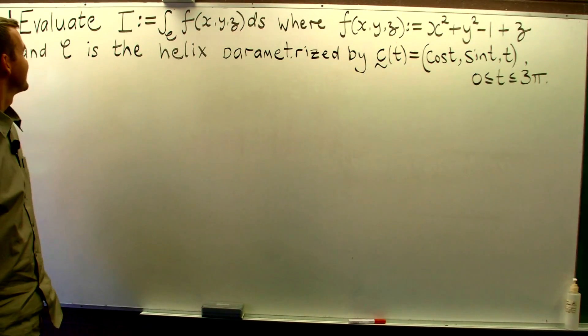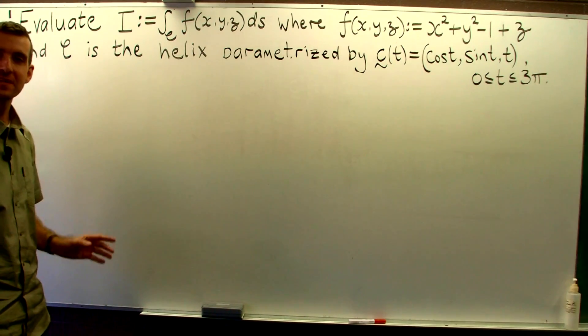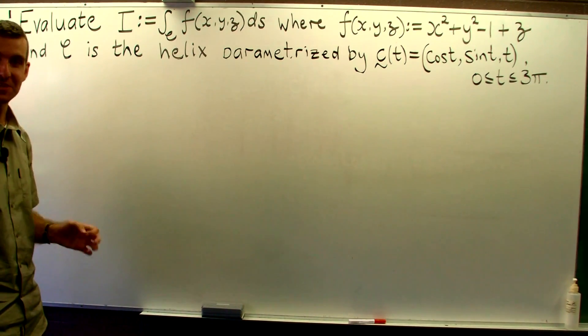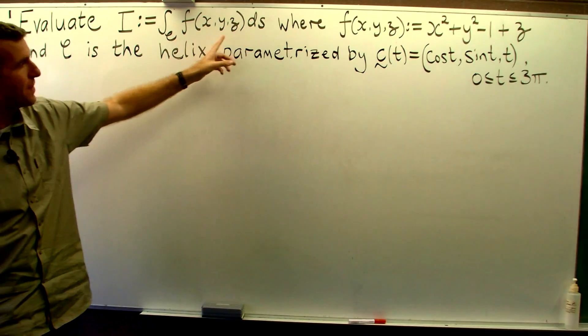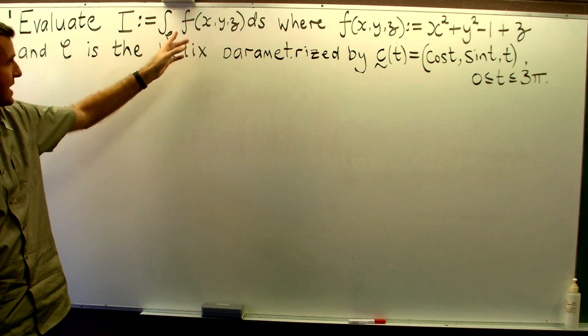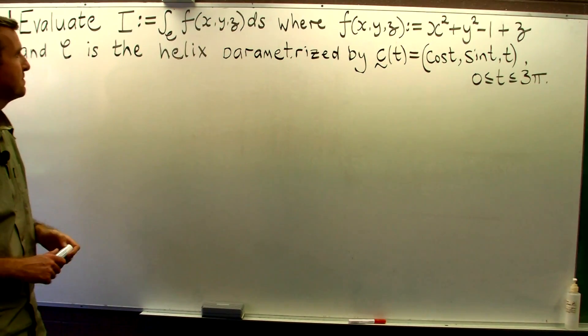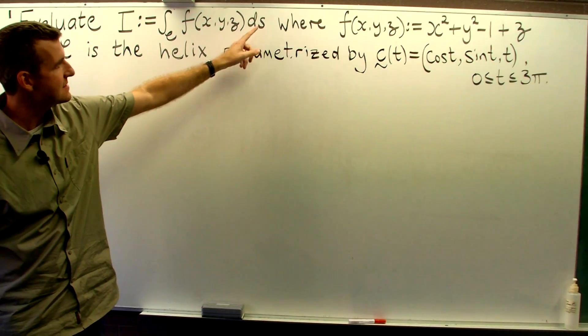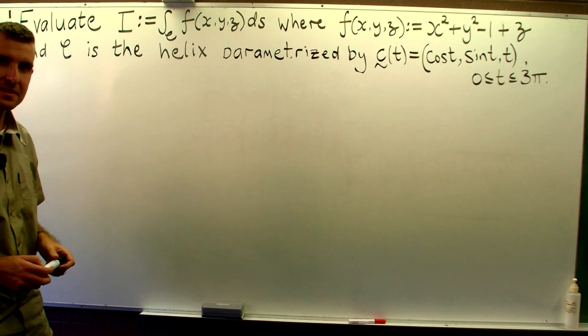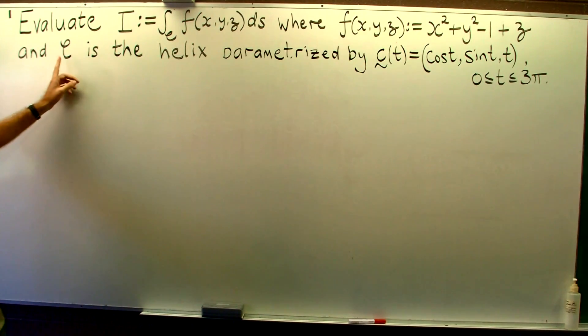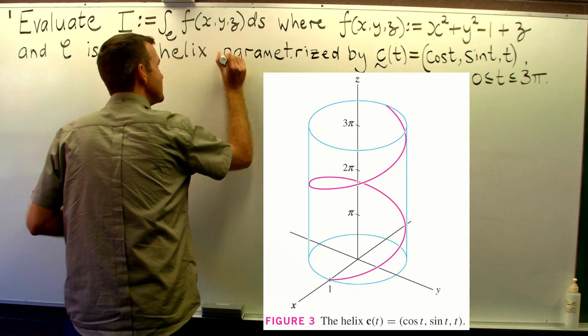Hi, everyone. Today we are going to look at the following problem that involves a so-called path integral. Now, this is the notation we use for a path integral. Here, in this particular example, f is just defined as this particular function. The ds is known as the arc length element. And this curly c is a so-called helix in three-dimensional space.